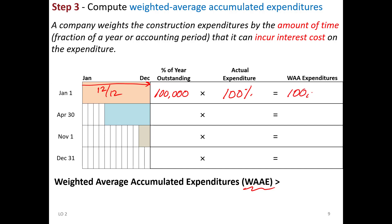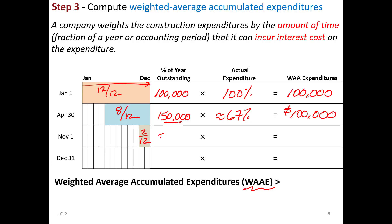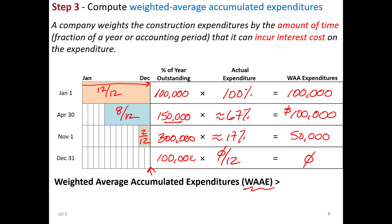On April 30th, a $150,000 payment was made to contractors, outstanding 8 of the 12 months — approximately 67% — so its weighted average is about $100,000. The payment made on November 1st was $300,000, outstanding 2 twelfths of the year, approximately 17%, giving a weighted average of $50,000. The payment on December 31st for $100,000 was outstanding 0 twelfths of the year, so there is no weighted average expenditure for that payment.